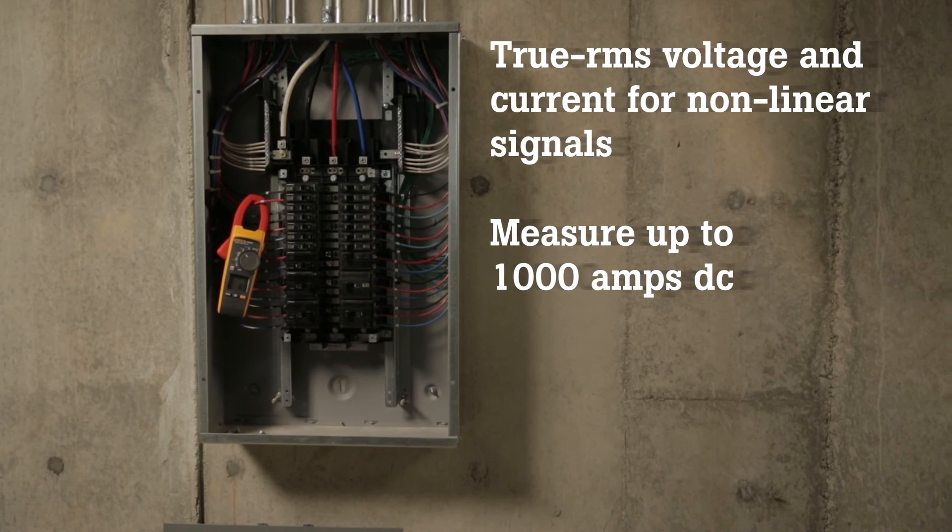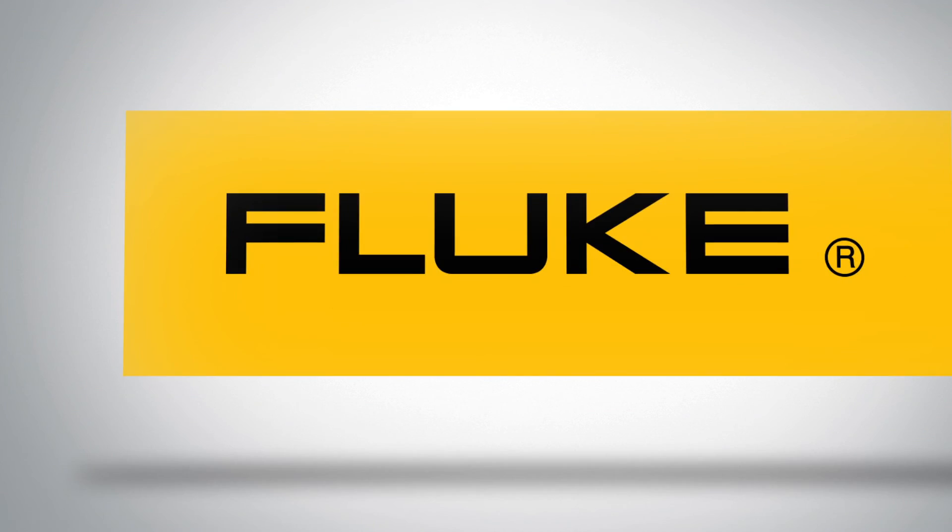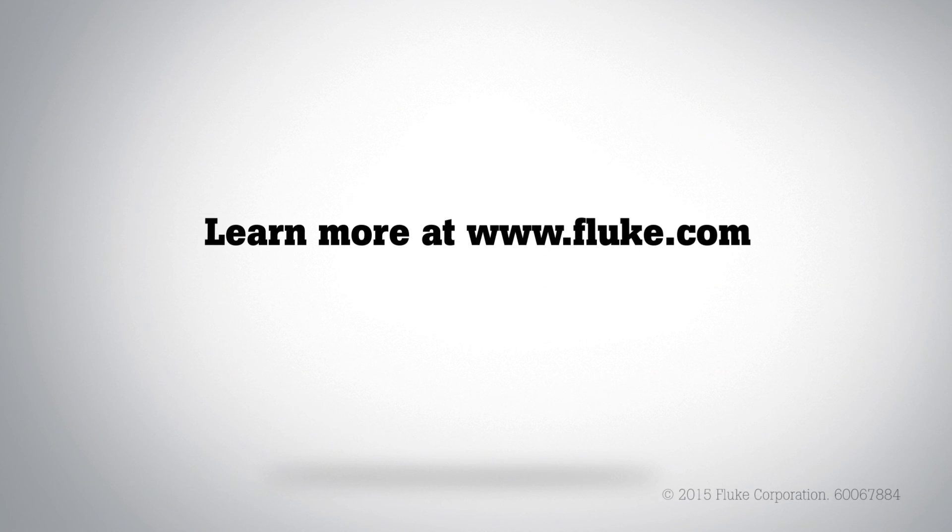Measure up to 1000 Amps DC and up to 2500 Amps AC. Learn more about the Fluke 376 clamp meters. Visit Fluke.com.